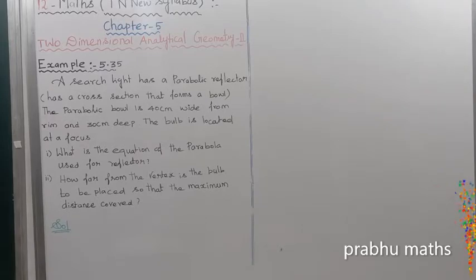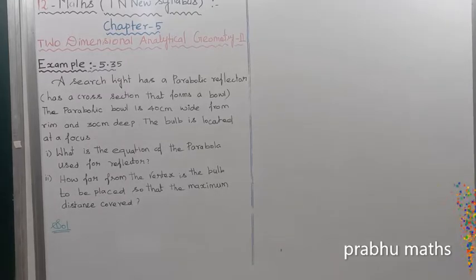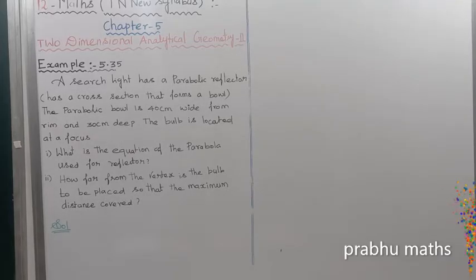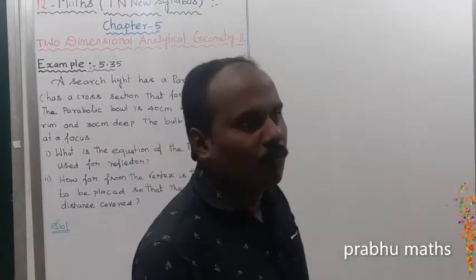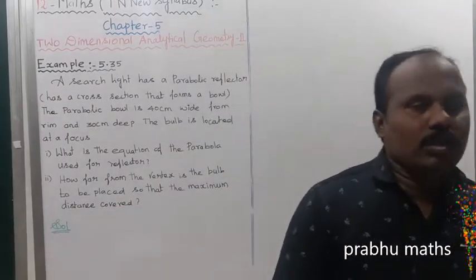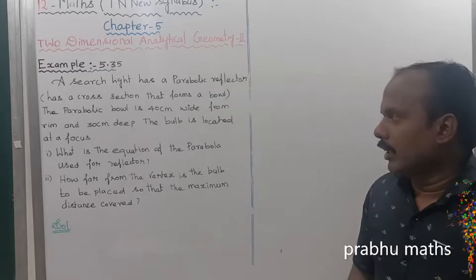The parabolic bowl is 40 cm width from rim to rim and 30 cm deep. The bulb is located at the focus. The first question: find the equation of the parabolic reflector.